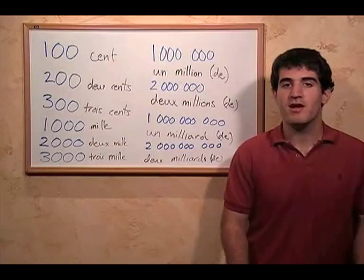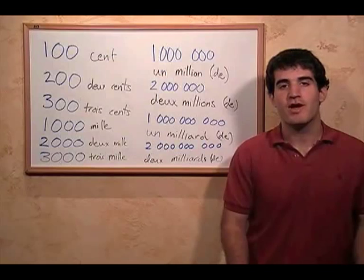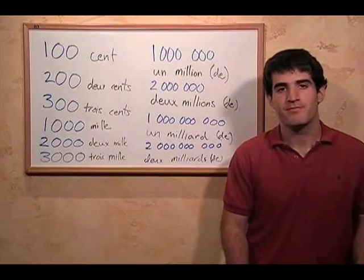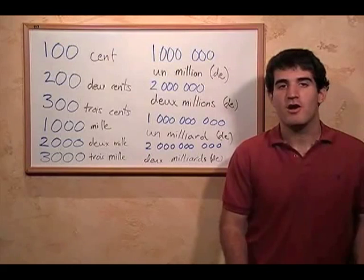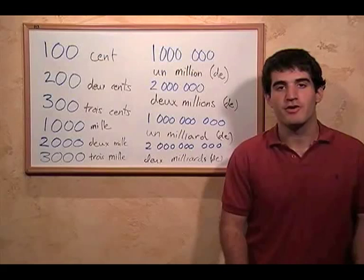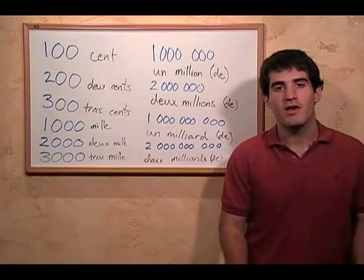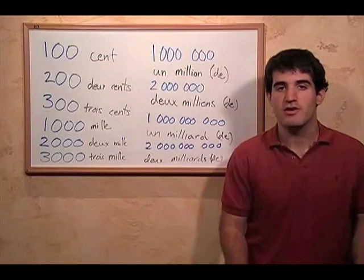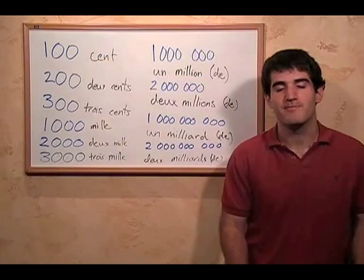And for mille, unlike for a hundred, we don't write an s at the end of mille when it's more than one. Also, for mille and cent, we never put the word un before cent or mille. So we never say one hundred or one thousand — we just say cent and mille when it's one.